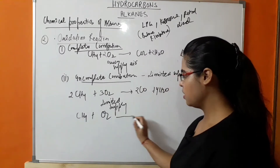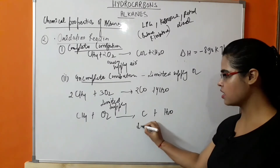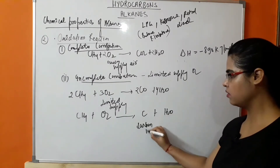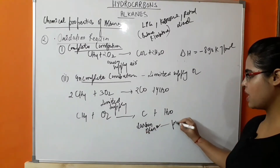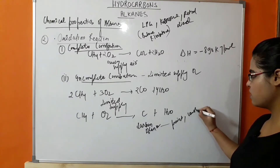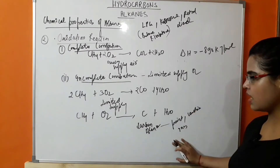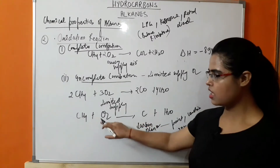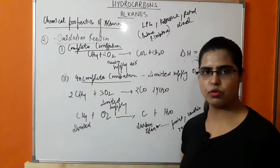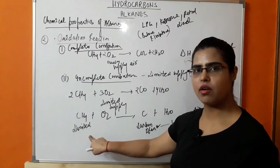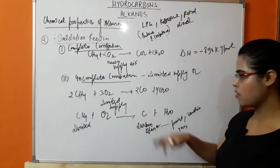The second example of incomplete combustion: when CH4 reacts with oxygen in limited supply of hydrocarbon instead of O2, there will be formation of carbon and water. This carbon is known as carbon black, which is used in paints, varnishes, and inks.